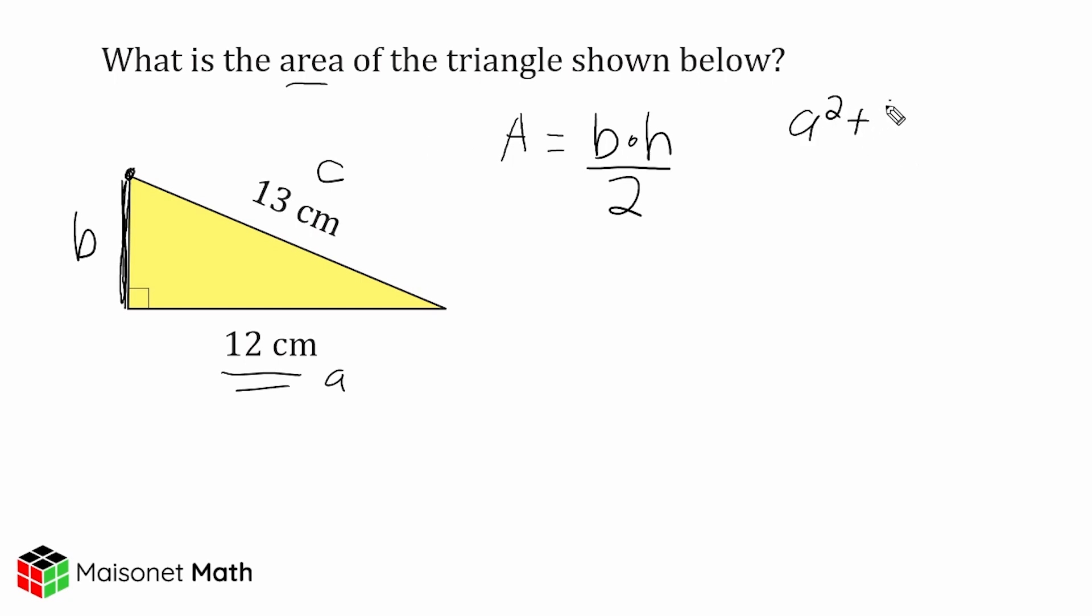A squared plus B squared is equal to C squared, and then we're going to plug in the only given leg into A. So we're going to write 12 squared plus B squared is equal to the given hypotenuse of 13 squared.